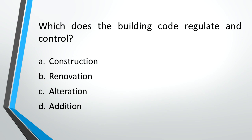Which does the building code regulate and control? A: Construction, B: Renovation, C: Alteration, D: Addition. Answer: A, Construction.